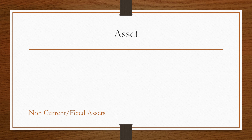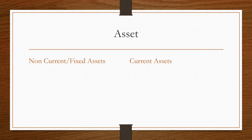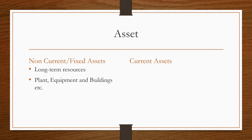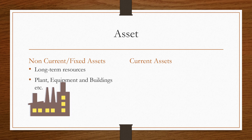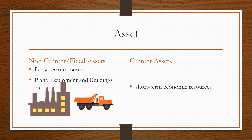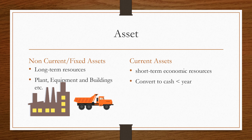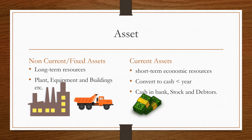There are two types of assets. Non-current or fixed assets are long-term resources from which you can derive economic benefit for many years — examples include plant and equipment, buildings, and vehicles. Current assets are short-term economic resources expected to be converted to cash in less than a year's time — these are normally cash in your bank, stock, and debtors.